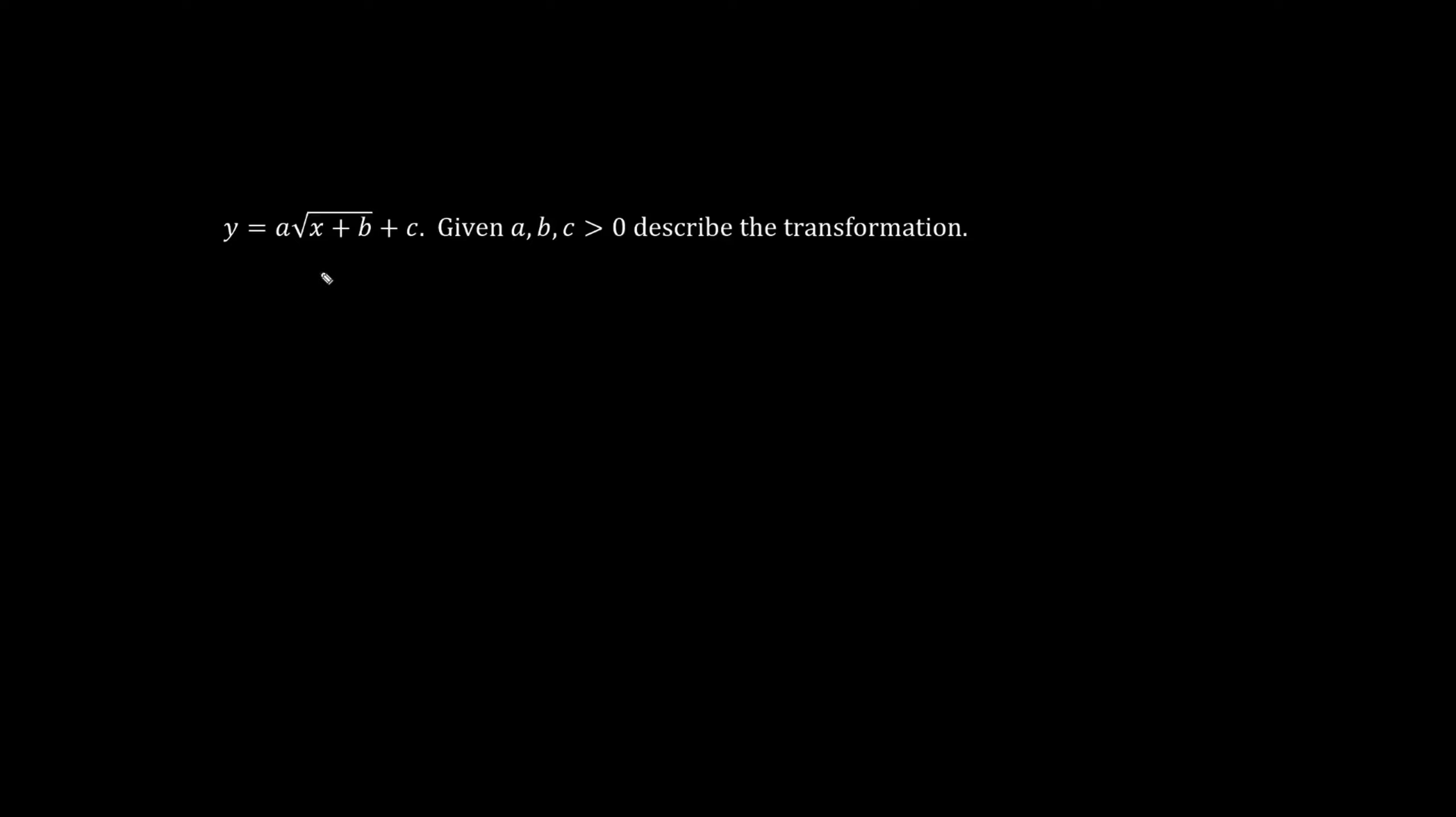Let's describe the transformation. This a value means we multiply all the y values by a. For example, if we say y equals the square root of x, this here is your standard square root graph. It goes through 0 comma 0 and 1 comma 1.